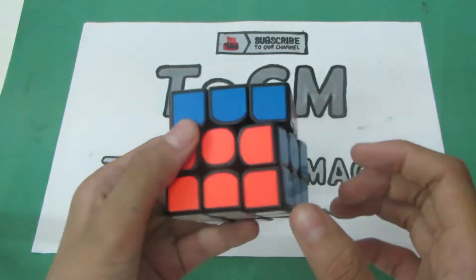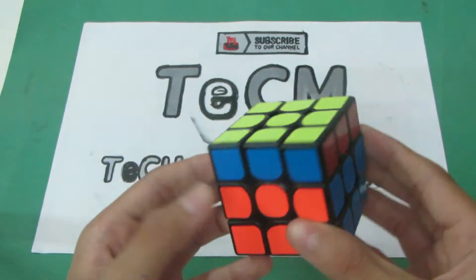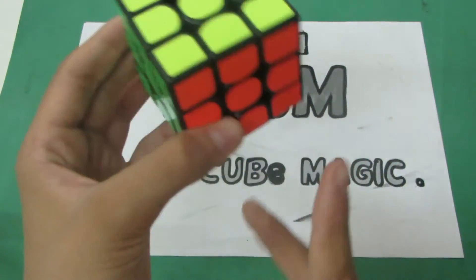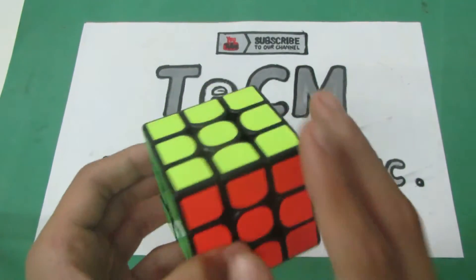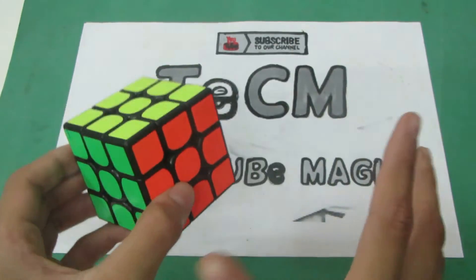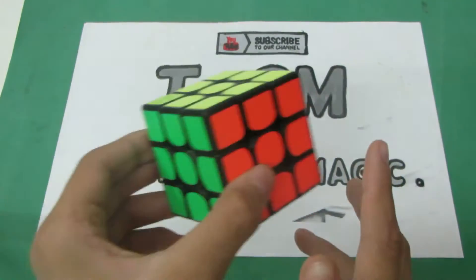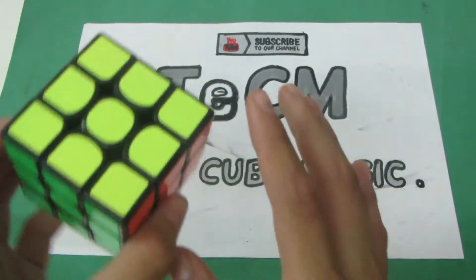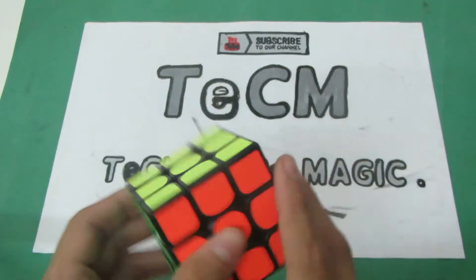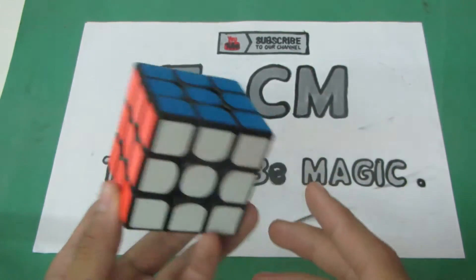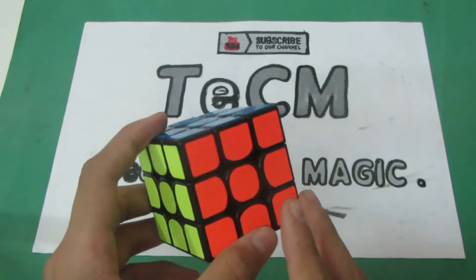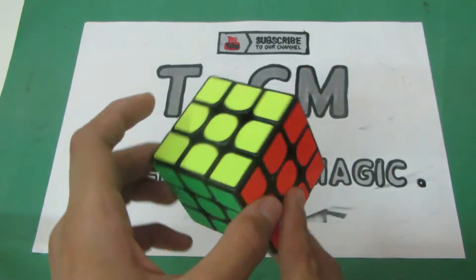you just look at the cube, recognize the case, do the algorithm and the cube is solved. There is one more difference in two-look and one-look PLL and that is the most important. Two-look PLL has only six algorithms and one-look has twenty-one algorithms. So these are the main differences. So let's start with the algorithms.